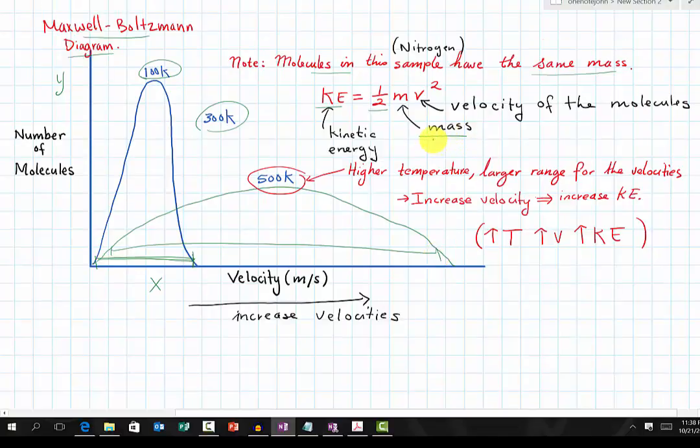In this case, the mass is the same because we are using nitrogen samples. If we look at the graph, at the higher temperature, you have a wider range of velocity. Therefore, the molecules can travel faster. So if we have velocity increase, what happens to our kinetic energy? It also increases.